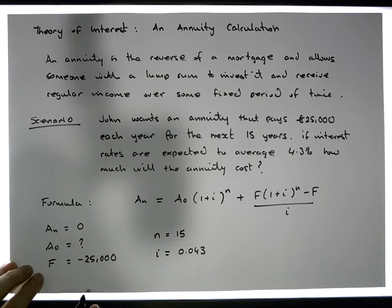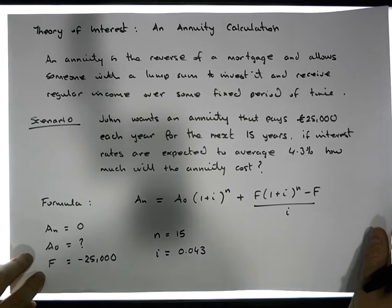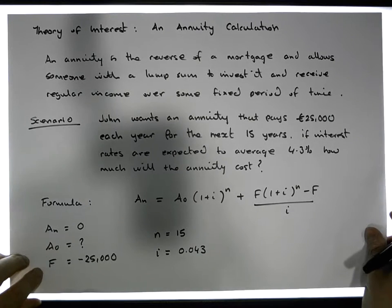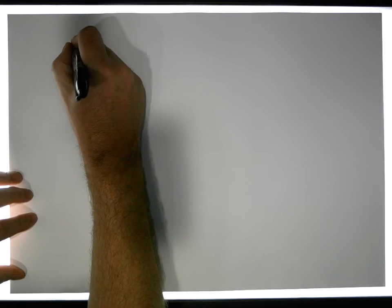We're withdrawing and not actually putting something in, we're not investing into the account. So based off this we can actually do our calculation. Our calculation then becomes, let's just do our formula again.